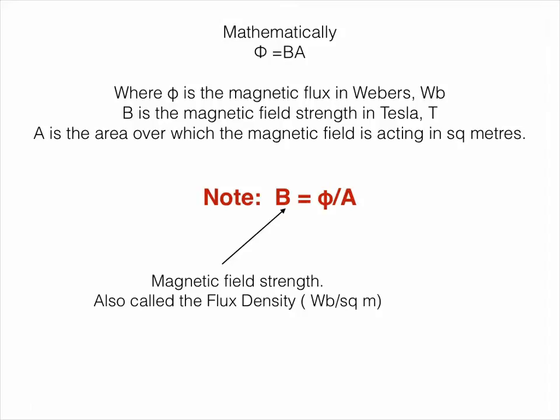I've rearranged it further down the page there so that it gives B equals phi over A, and that's just another way of looking at magnetic field strength. So you can also call it the flux density.